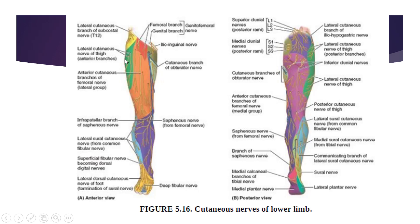In the middle region of the thigh, there are three nerves. Number one, the lateral part is supplied by the lateral cutaneous nerve of the thigh. The middle part is supplied by the anterior cutaneous branch of the femoral nerve. The medial part is supplied by the cutaneous branch of the obturator nerve. Then we come towards the leg.